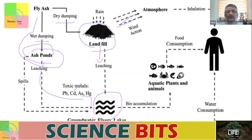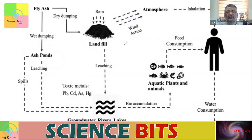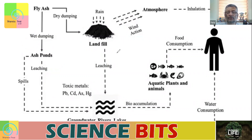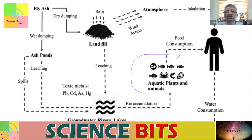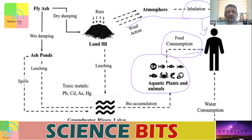When fly ash reaches water bodies like groundwater, rivers, or lakes, there can be bioaccumulation. A plankton will ingest cadmium; the plankton will be eaten by a small fish, the small fish by a big fish, and so on. Ultimately, the big fish will contain a huge quantity of toxic material. Aquatic plants and animals accumulate it, and when we consume them as food or inhale it from the atmosphere or drink contaminated water, it comes to us.